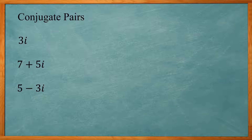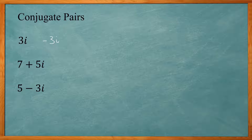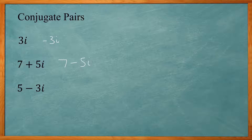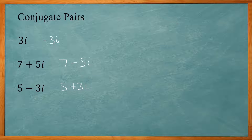Complex numbers come in conjugate pairs. So if I have 3i, its pair would be negative 3i. If I have 7 plus 5i, its conjugate would be 7 minus 5i. If I had 5 minus 3i, its conjugate would be 5 plus 3i. Remember that these always come in conjugate pairs.